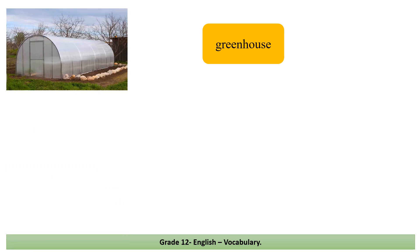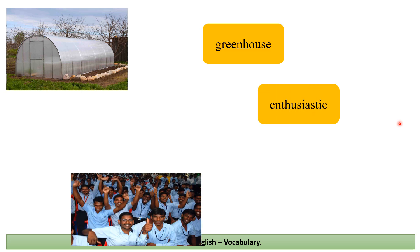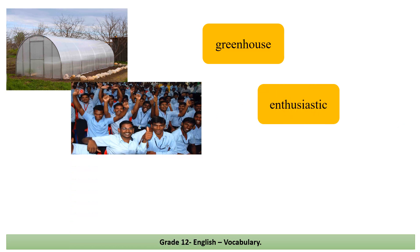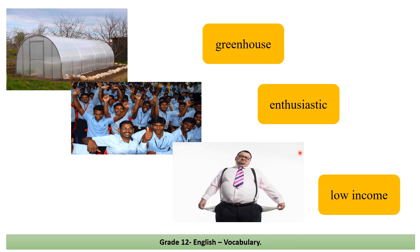Let's look at new vocabulary. 'Greenhouse' is a glass or plastic structure for growing and planting vegetables and plants. 'Enthusiastic' is a feeling — very interested and keen; look at the boys, they are very interested and keen to participate. 'Low income' means not earning much money from working.